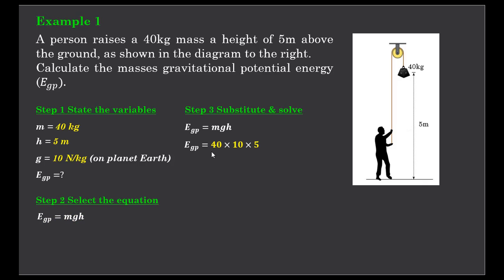Let's simply substitute our numbers in. M is 40 kilograms, G is 10 newtons per kilogram, H is 5 metres. So 40 times 10 is 400, times 5 is 2000. A person raising a 40 kilogram mass 5 metres above the ground would have a gravitational potential energy of 2000 joules, assuming a gravitational field strength of 10 newtons per kilogram on Earth.